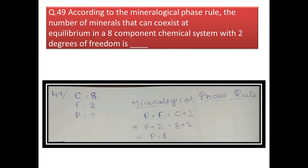Next question: according to the mineralogical phase rule, the number of minerals that can coexist at equilibrium in an 8-component chemical system with 2 degrees of freedom is? Given: C = 8, F = 2. Applying the phase rule: P + F = C + 2, solving gives P = 8.